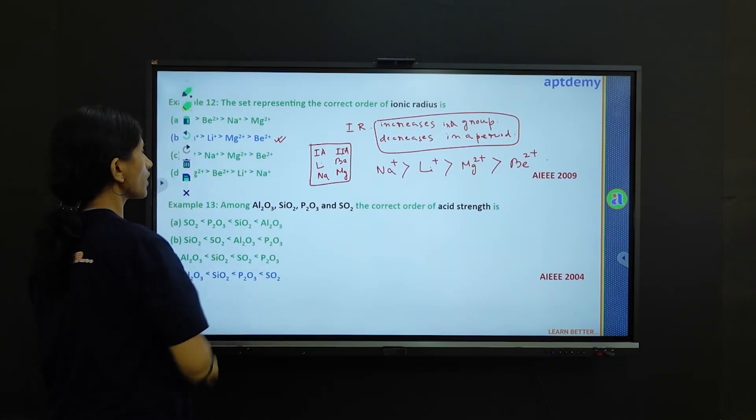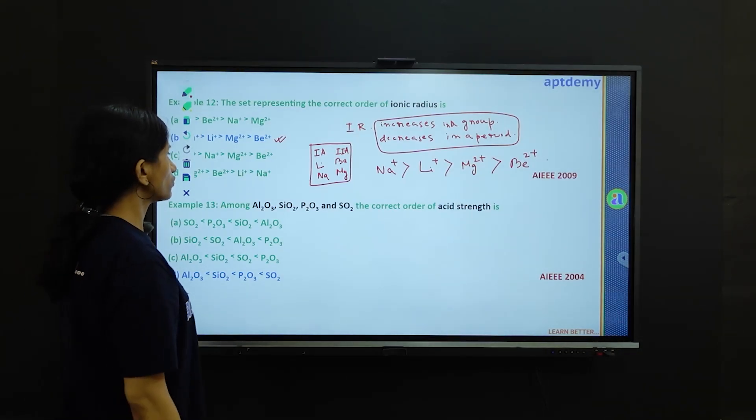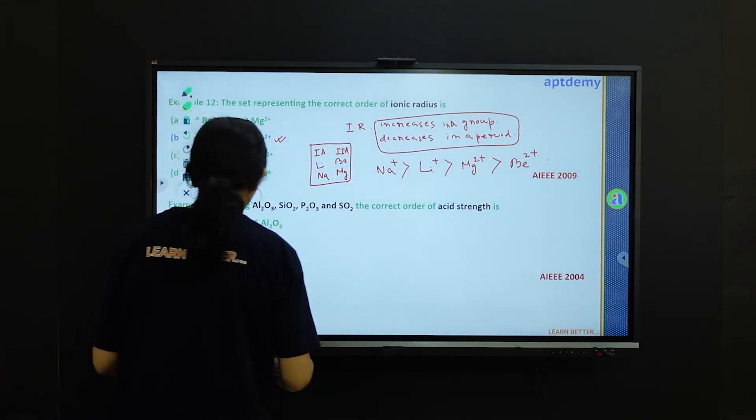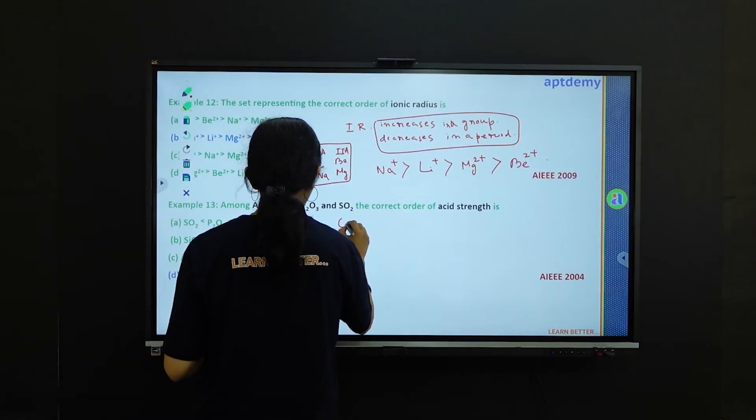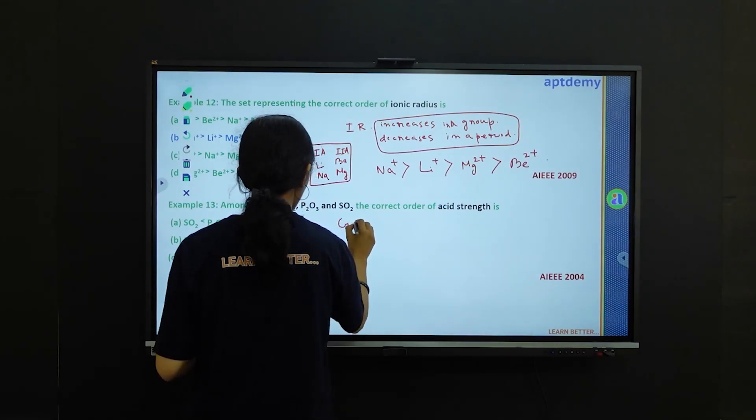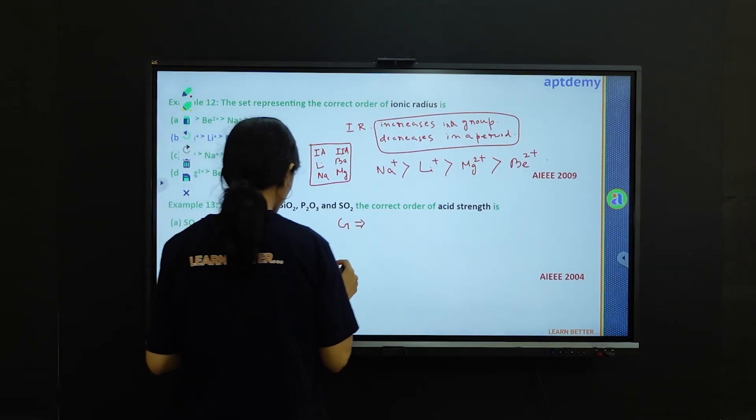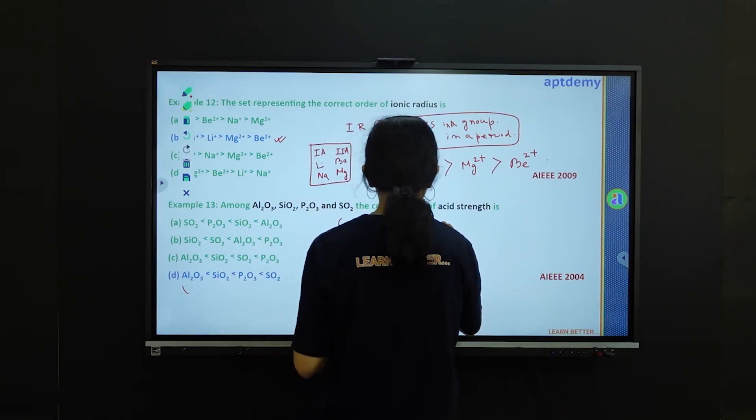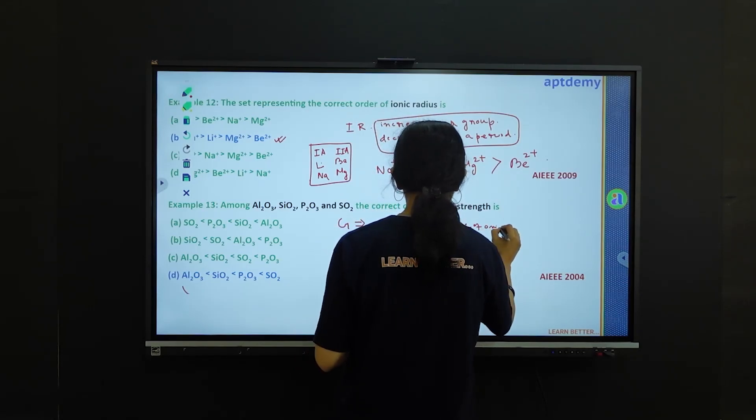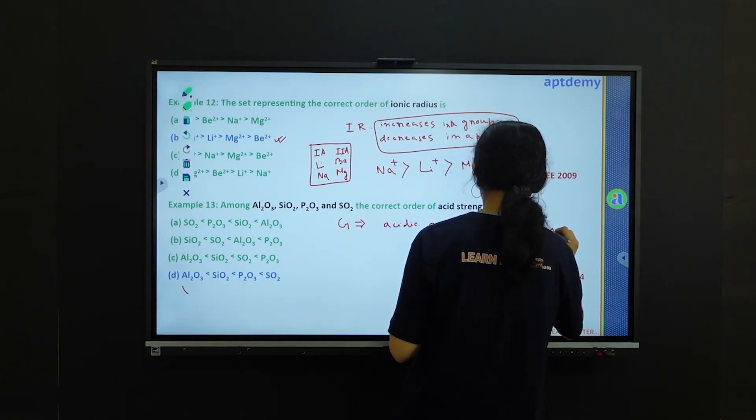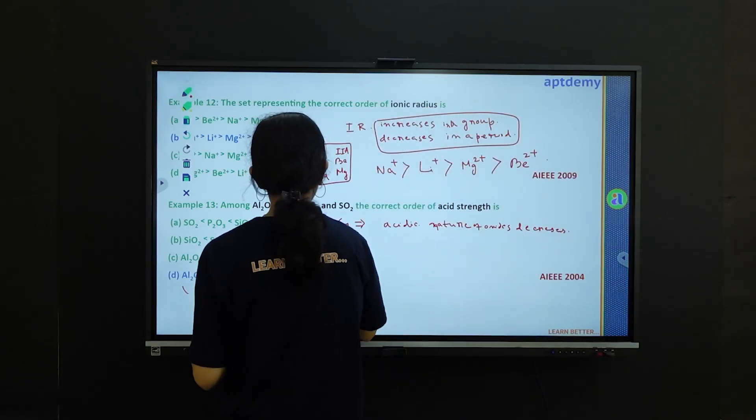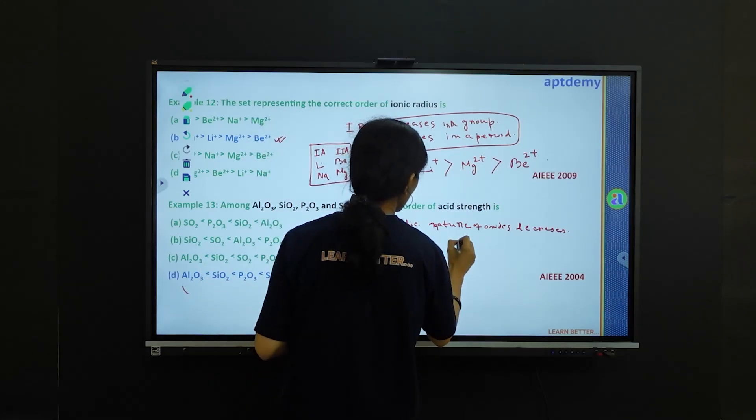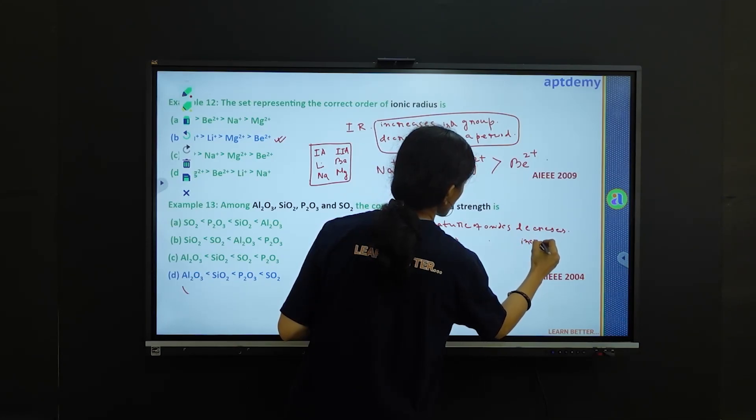Example 13 is asking among Al2O3, SiO2, P2O3 and SO2, the correct order of acid strength. What we know is that if you go down a group, acidic nature of oxide decreases. And along a period, acidic nature of oxide increases.